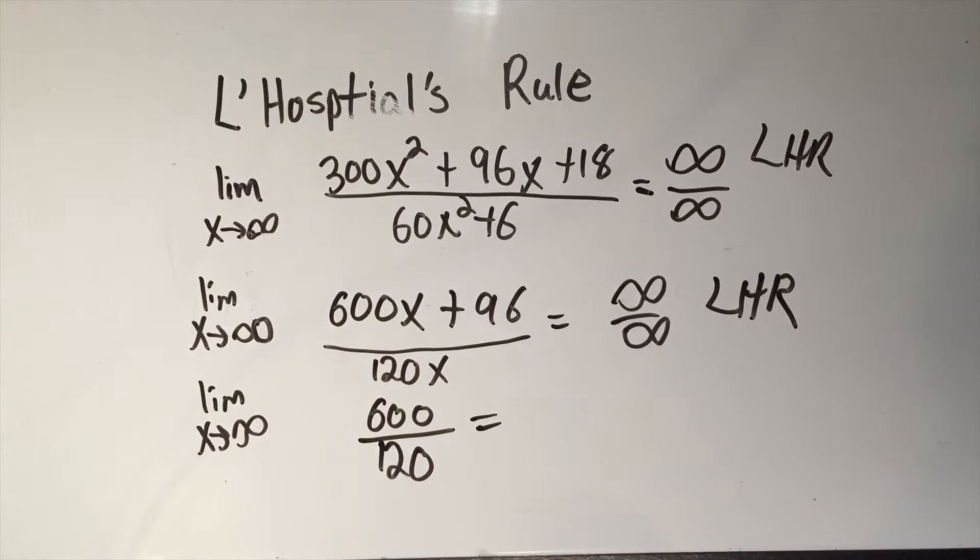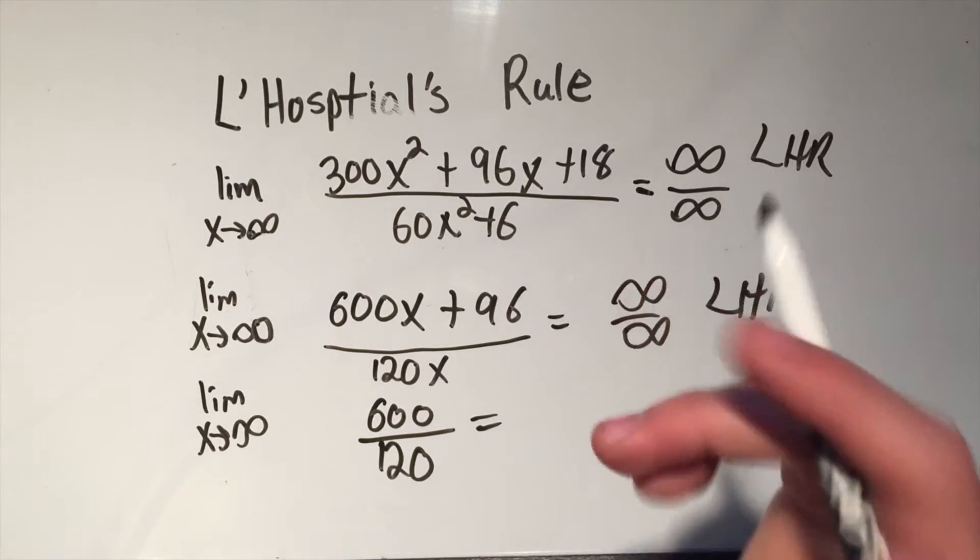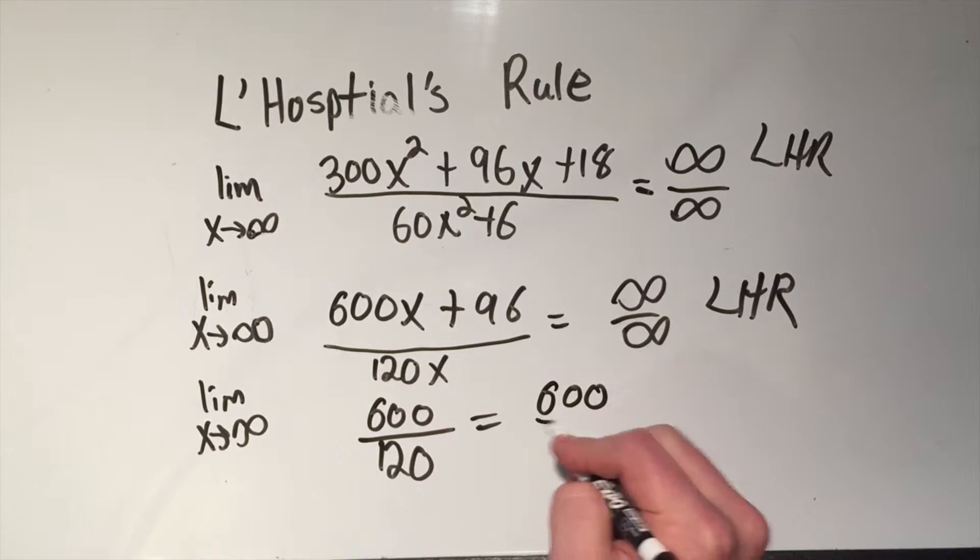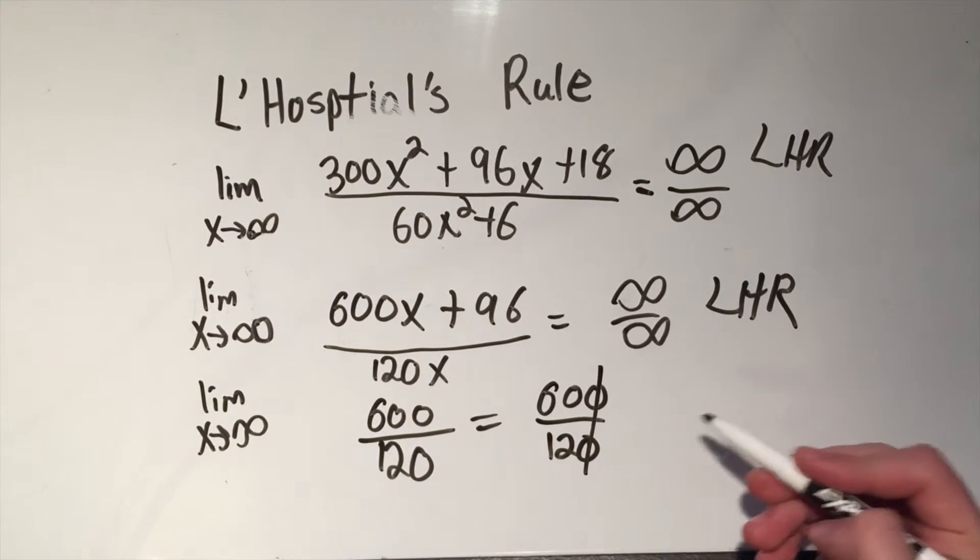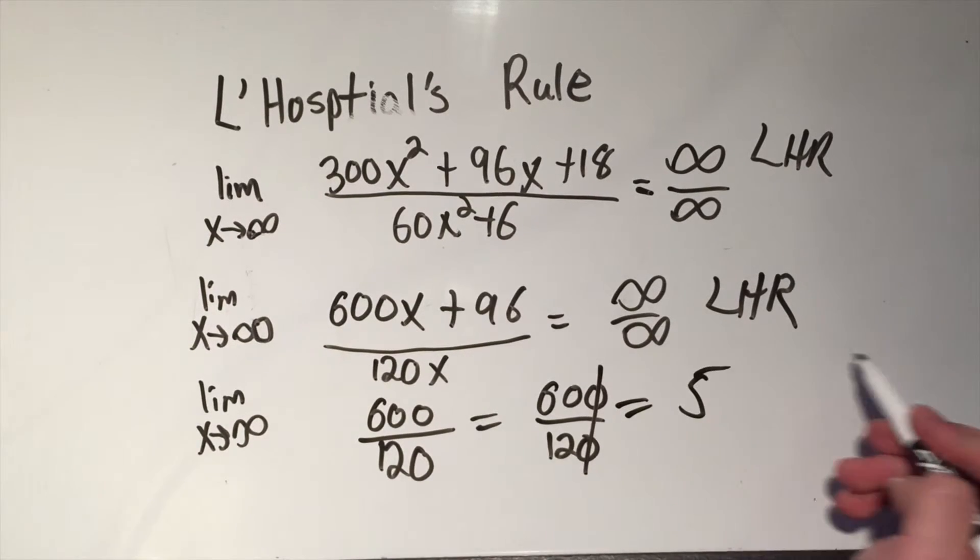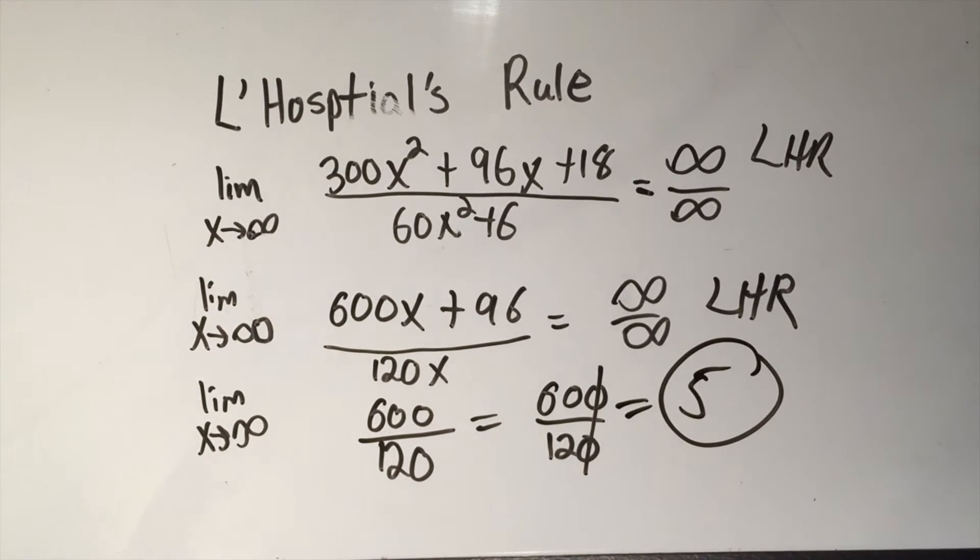Ah. I've got a constant now. And I don't care what my limit's going to. You know from the constant law that the limit of a constant is just that constant. And you can simplify this. Cross those zeros. 60 over 12. That's 5. And that's the answer.